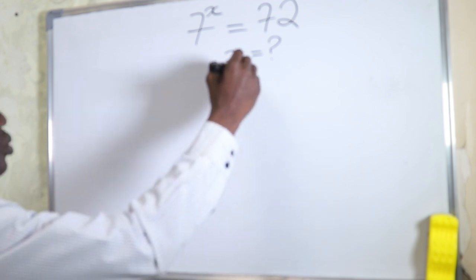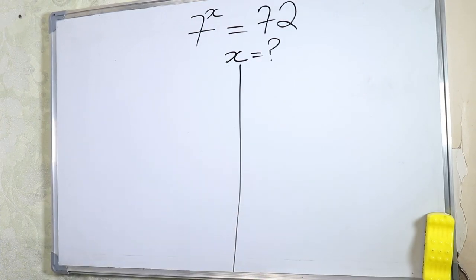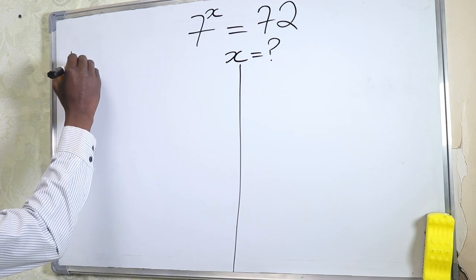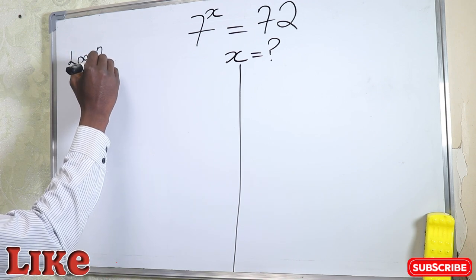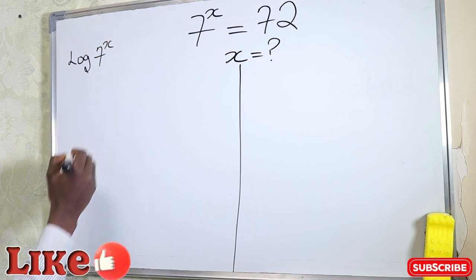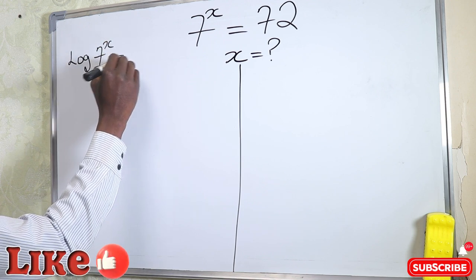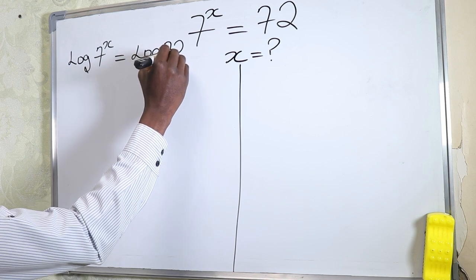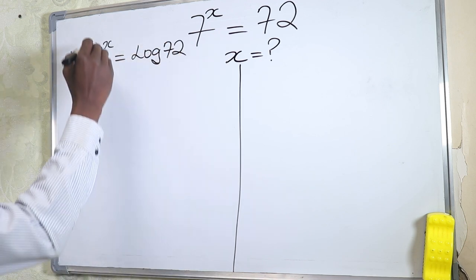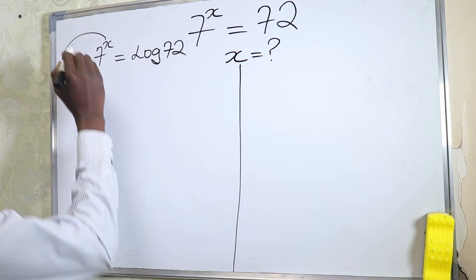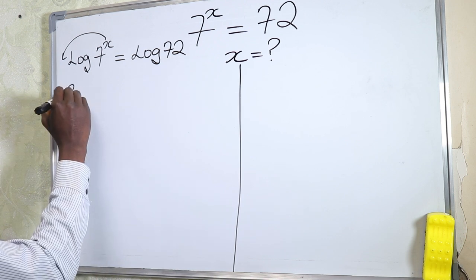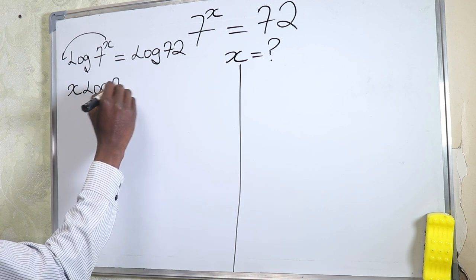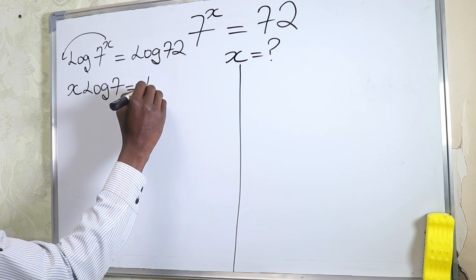Now to solve this question, we're going to look at using logarithm. We're going to take the log of 7^x base 7, equal to the log of 72. According to the law of indices, the exponent x comes over here, and this becomes x·log of 7.